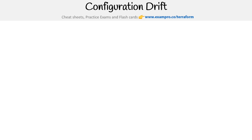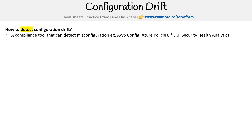So what can we do about this? There are three things: detect, fix it, and then prevent it. To detect configuration drift, if you have a compliance tool, it can detect misconfiguration. AWS Config can do that, Azure Policies can do that, and GCP Security Health Analyzer can do that.